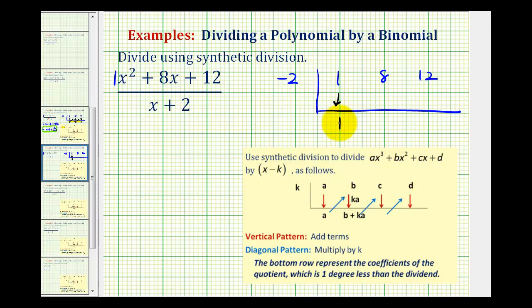So we'll bring the one down, and then we'll have one times negative two. That's negative two for the next column. And then we add eight plus negative two is six. Multiply by negative two again, so six times negative two is negative 12. We add, this would be zero.